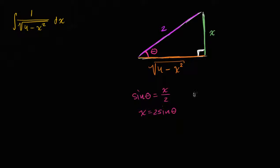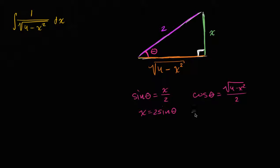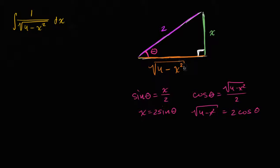What about cosine of theta? Cosine of theta equals the adjacent side — the square root of four minus x squared — over the hypotenuse. Solving for that side, the square root of four minus x squared equals two cosine theta. So if x equals two sine theta, this entire expression simplifies to two cosine theta.